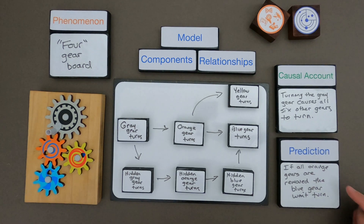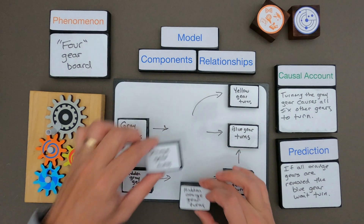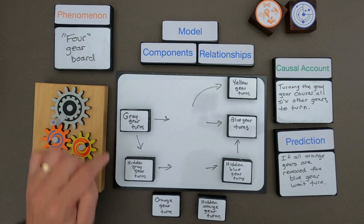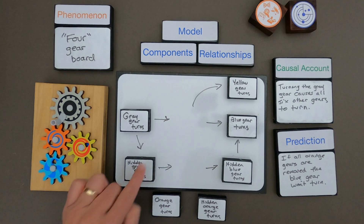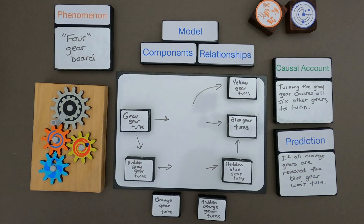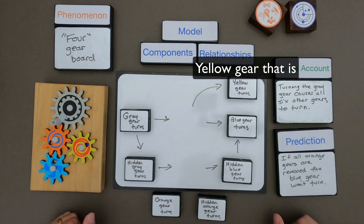The prediction I've made is: if all the orange gears are removed, the blue gear won't turn. The nice thing about a model is I could physically take this out. So if I take out the orange gear and the hidden orange gear, you can see the gray gear will turn the hidden gray gear, but it won't be able to cause a change in the orange gear, and that won't cause a change in the blue gear. We also wouldn't have movement in the hidden blue gear. That's the power of a causal model — it allows you to show all the causal relationships and then make predictions.